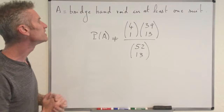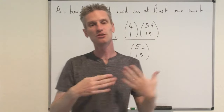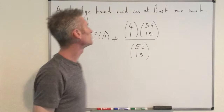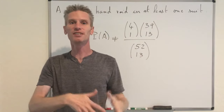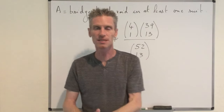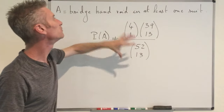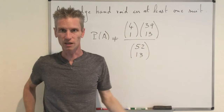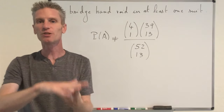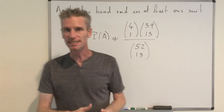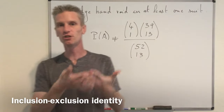That's the key point: this expression double-counts bridge hands that are void in more than one suit. This tells us that being void in a given suit does not exclude being void in another suit — in other words, the event of being void in diamonds and the event of being void in clubs are not mutually exclusive. This expression would be correct only if those events were mutually exclusive, but they are not. So we have to use the inclusion-exclusion identity.